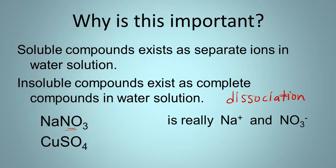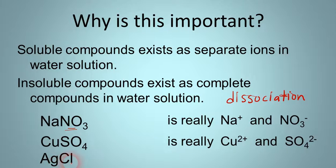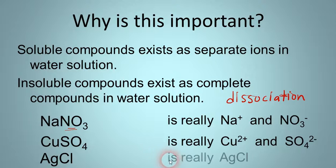For example, sodium nitrate is soluble — all nitrates are soluble — so when you dissolve it in water you really have a mixture of sodium ions and nitrate ions; the ionic compound breaks apart. Copper-2 sulfate is also a soluble compound, so it dissociates into copper-2 ions and sulfate ions. Silver chloride, on the other hand, is an insoluble compound — it's one of those three exceptions for chloride — so when you drop it into water it's not going to dissociate; it remains as AgCl. If it's soluble, it breaks apart into its ions; if it's insoluble, it does not.